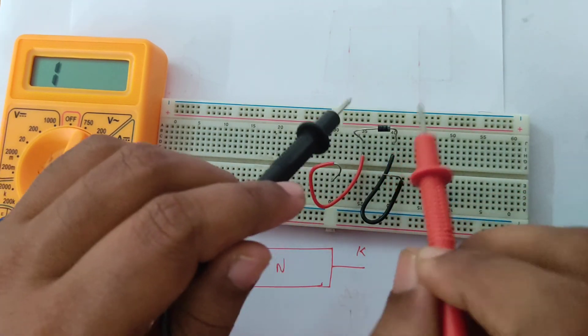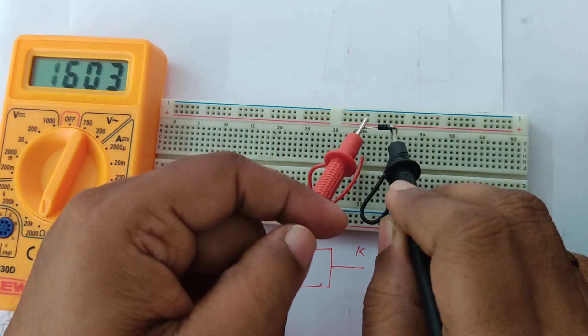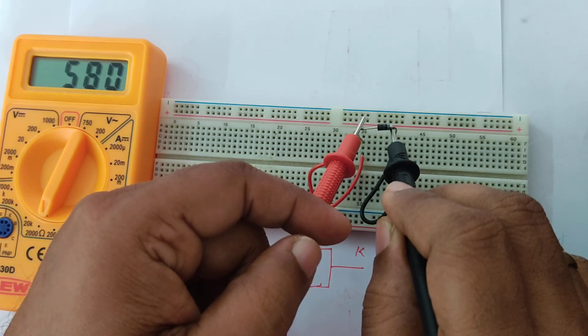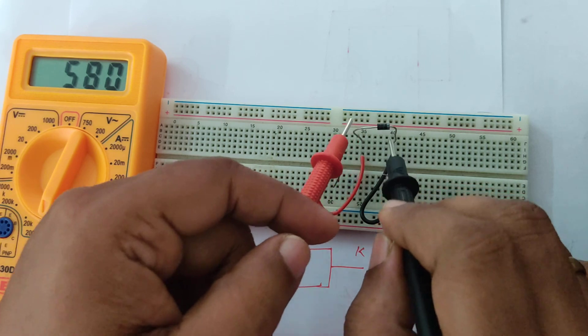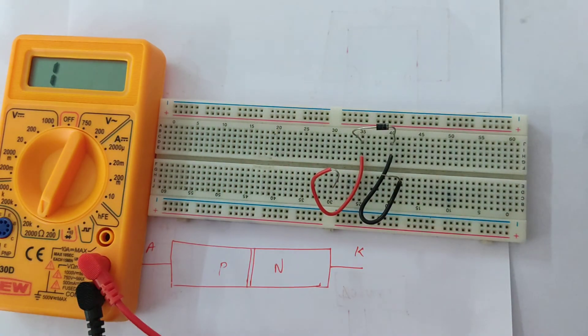Now I have come to a conclusion that the resistance is low during the forward bias, making sure that the current is flowing. Because the resistance is minimum, the current is there. So this is how you check a PN junction diode, whether it is working or not. Thank you.